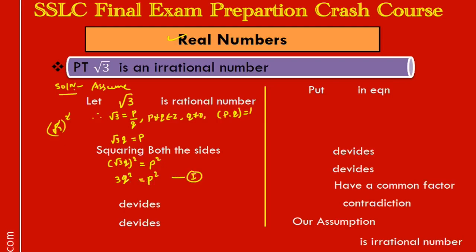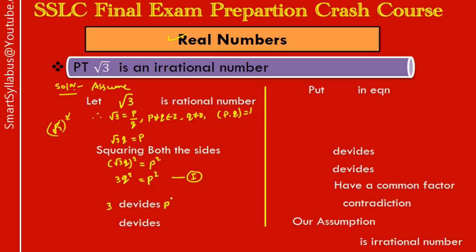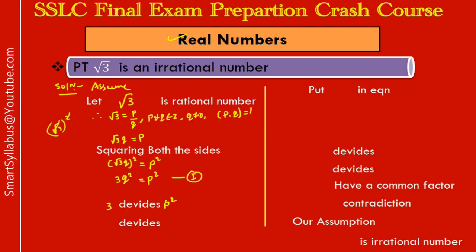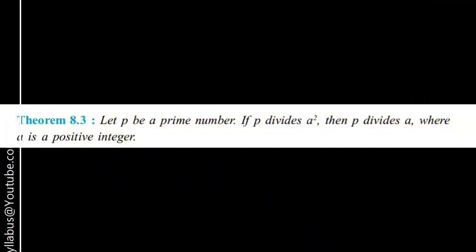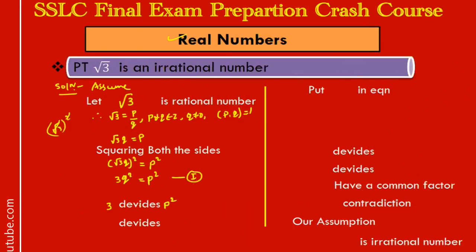Now, rearranging equation 1: q² = p²/3, which means 3 divides p². In your maths textbook, page number 157, Theorem 8.3 states: if a number divides the square of a certain number, then the same number also divides that number without the square. So if 3 divides p², then 3 divides p. This is Theorem 8.3 in the real numbers section.